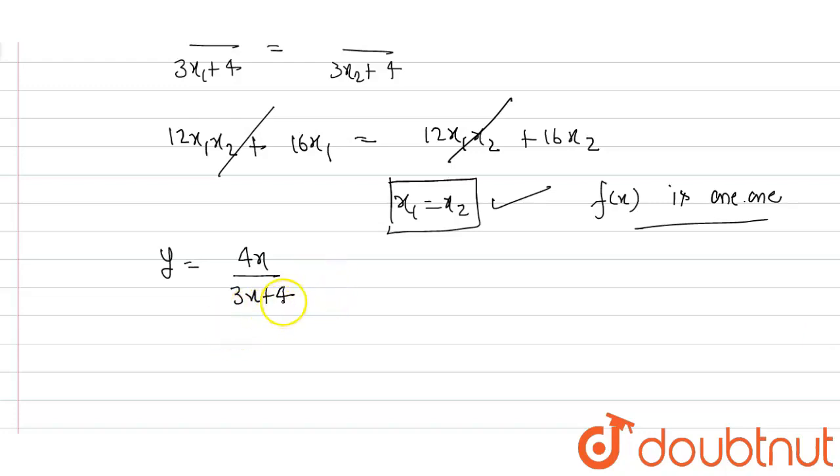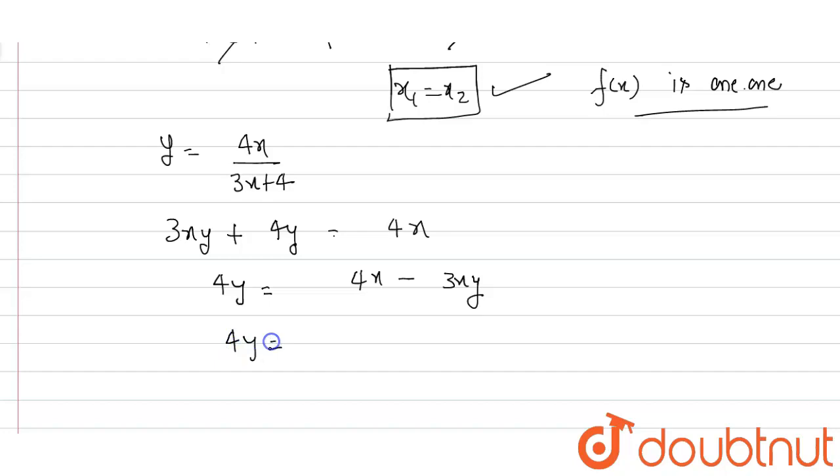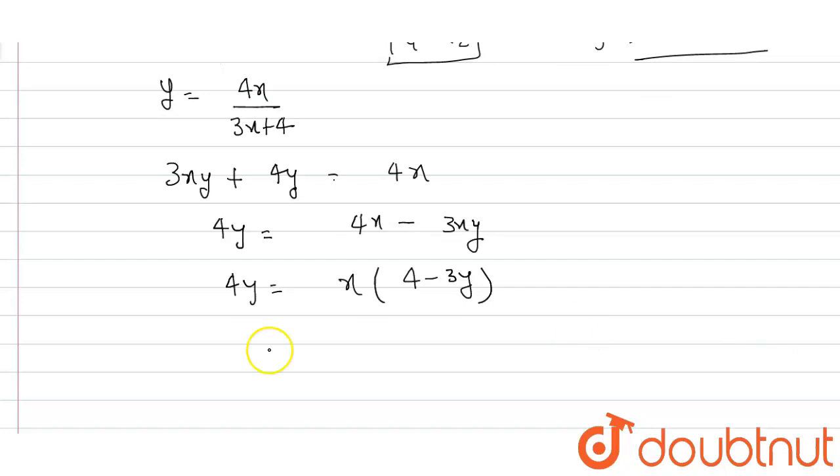Now to find the inverse, let y = 4x/(3x+4). Solving: 3xy + 4y = 4x, so 4y = 4x - 3xy. Taking x common, 4y = x(4 - 3y). Therefore x = 4y/(4 - 3y). We can see that y cannot equal 4/3.